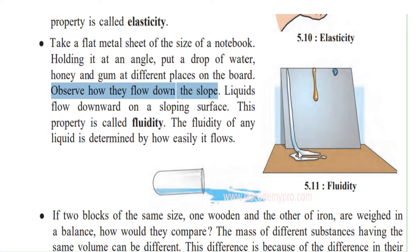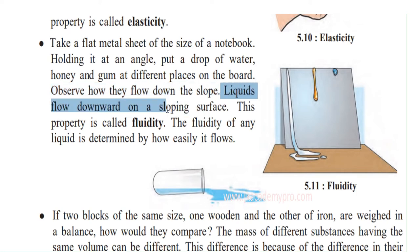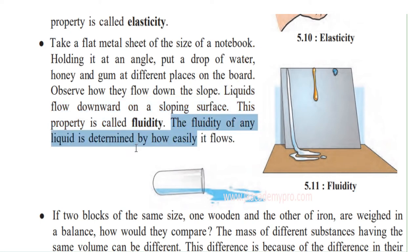Observe how they flow down the slope. Liquids flow downwards on a sloping surface. This property is called fluidity. The fluidity of any substance is determined by how easily it flows. Water is most fluid, honey a little less, and gum the least fluid because of its thickness.